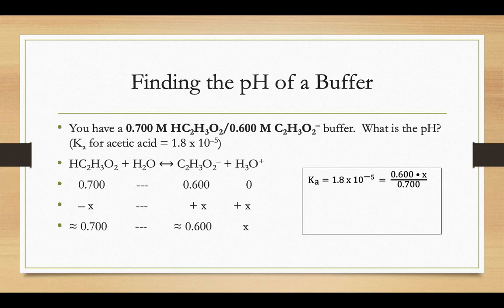After we set up our Ka products over reactants, we do the acetate times the hydronium over the acetic acid, then we could solve for x, which is our hydronium ion concentration, and then we could take the negative log of that number in order to find the pH of our buffer.